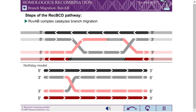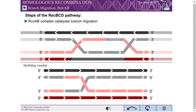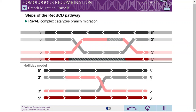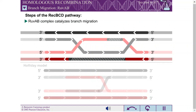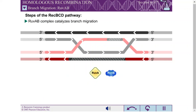The next step of the REC-BCD pathway is branch migration. This step is similar to that of the Holliday model, except it can involve two Holliday junctions instead of just one. In the REC-BCD pathway, this step is catalyzed by two proteins, RUV-A and RUV-B, which form RUV-AB complexes at Holliday junctions.